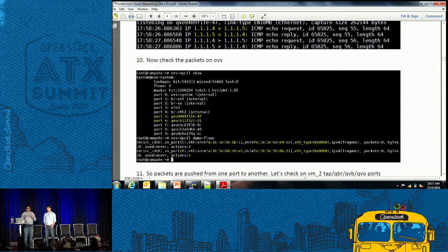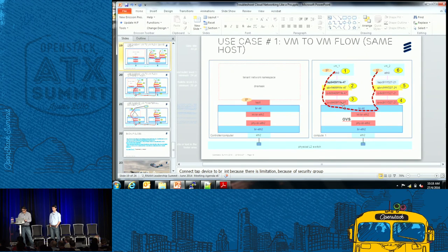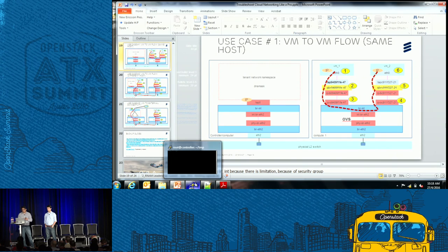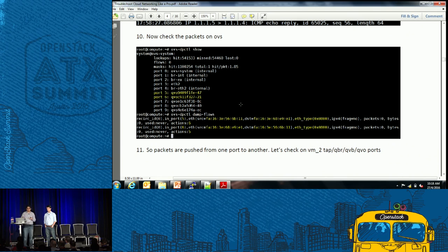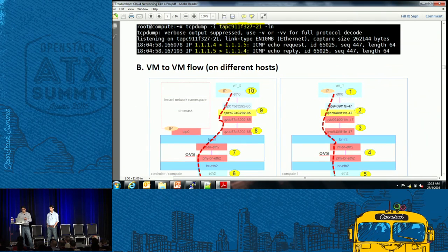On the OVS side, when you do the OVS DPCTL dump, you can see port numbers 5 and 3 — the packet is going from port 5, which is the QVO bridge on VM1, going towards port 6, which is the QVO on VM2. The packet goes from this QVO port to the other QVO port because that's internal — you cannot troubleshoot more on that path. Using OVS DPCTL, you can see that packets are flowing from one port to another, and on the other VM you can see the same TCP dump on all those ports. That's the first scenario.